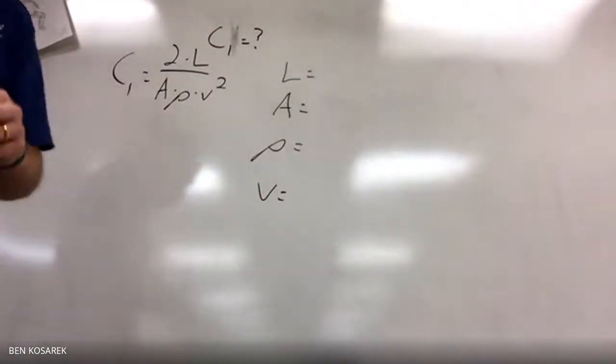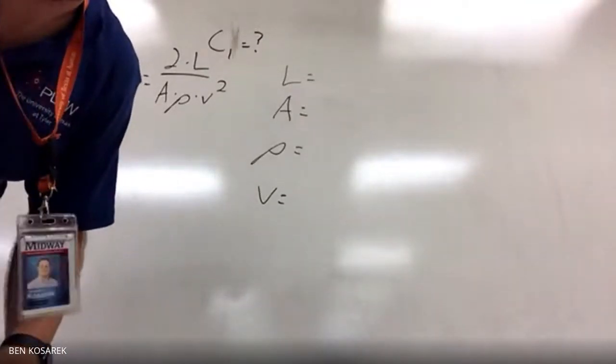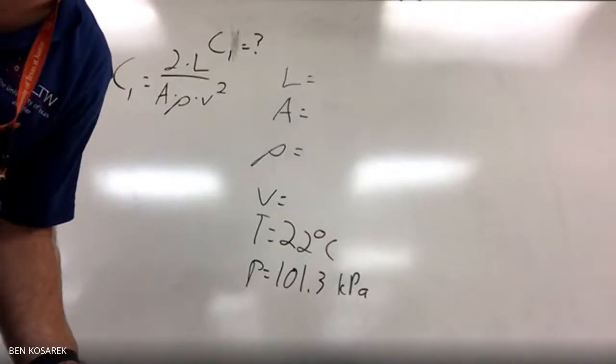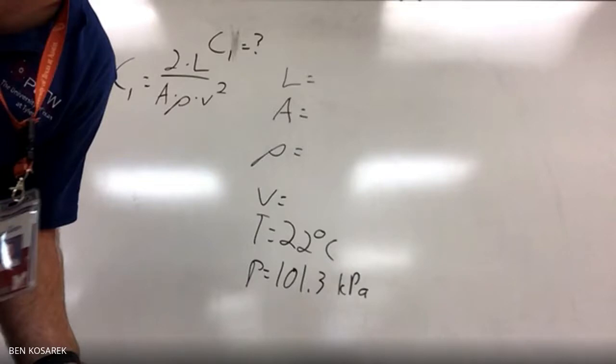When we read through the problem, it gives us temperature of 22 degrees Celsius, pressure of 101.3 kPa, takeoff speed of 55 knots or 102 kilometers per hour, area of 18.2 m squared, and weight of 2,328 pounds or 1,056 kilograms.